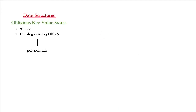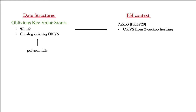In this paper, we formalize and study the general notion of oblivious key-value stores as a data structure to convey key-value pairs obliviously. We catalogued various existing constructions including polynomials that could classify as an OKVS. In particular, in the PSI context, we looked at the Paxos data structure, which was used to build the most efficient malicious-secure PSI in PRTY20.